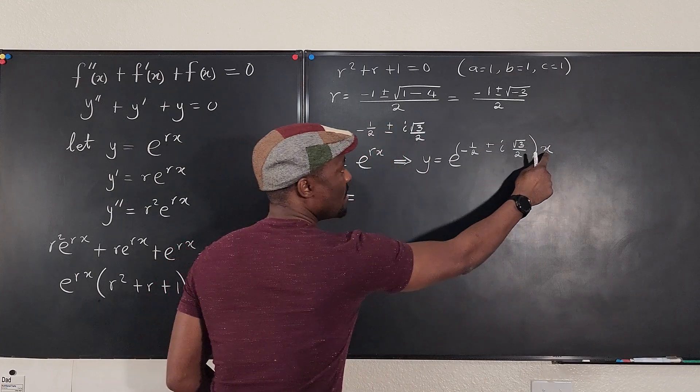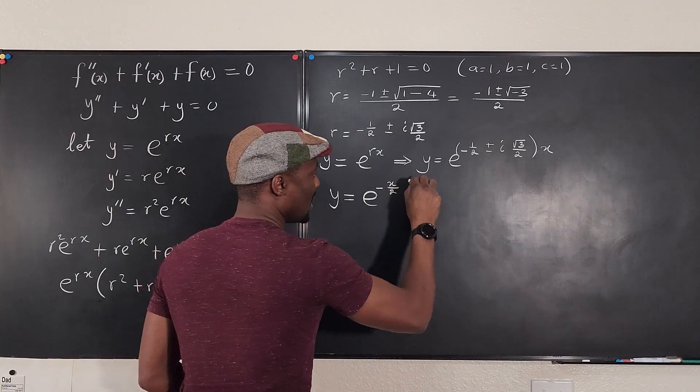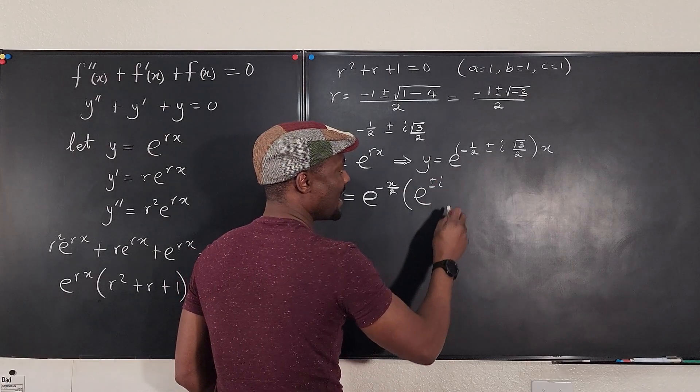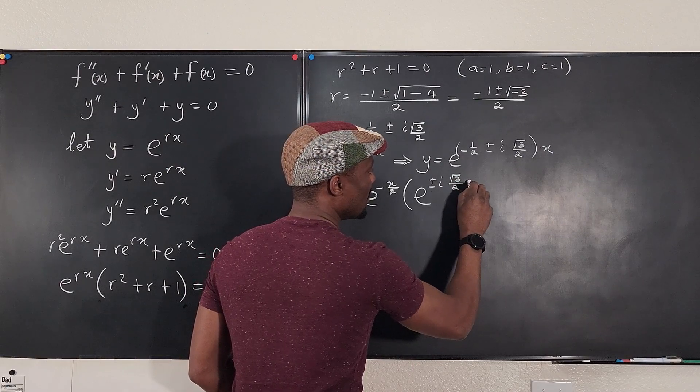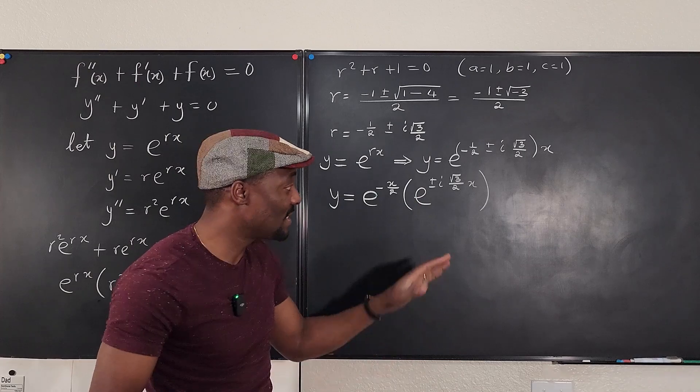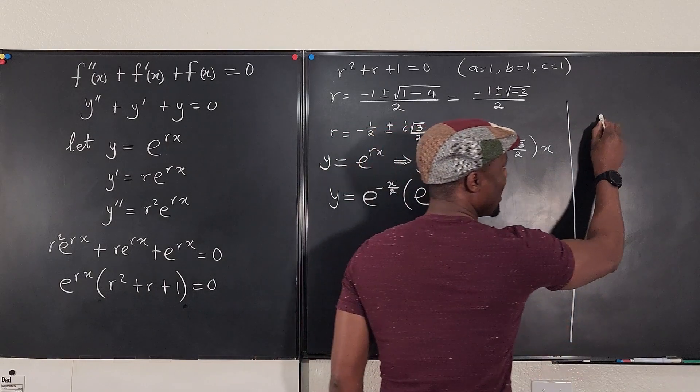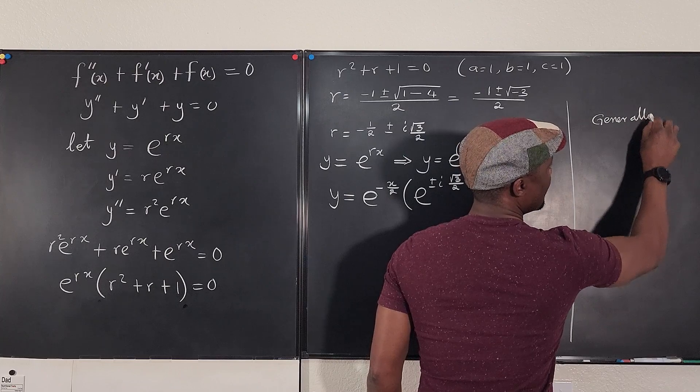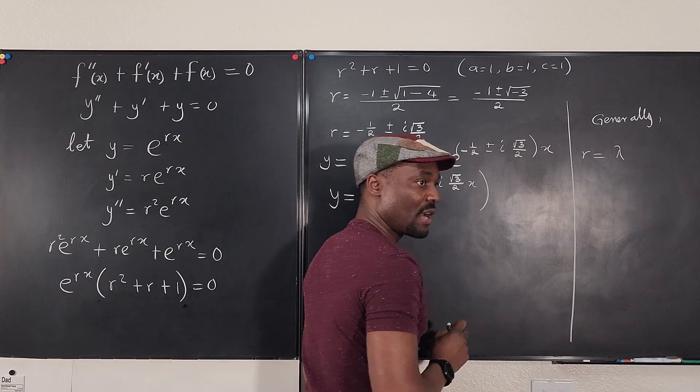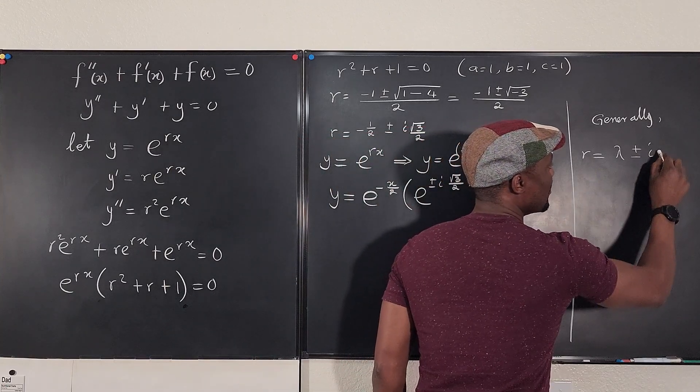So if we distribute the x, it looks like this is going to be e to the negative x over two times e to the plus or minus i times square root of three over two x. Now the biggest issue we're going to have is whether this is plus or minus. But for now, for this video, I want you to ignore it and just know that generally, let's do it here, generally, if after you solve your quadratic equation, you have r is equal to a real part of the solution, which looks like the negative one half that we have right now, plus or minus imaginary omega. If this is the solution you have, which looks like what we have this time...